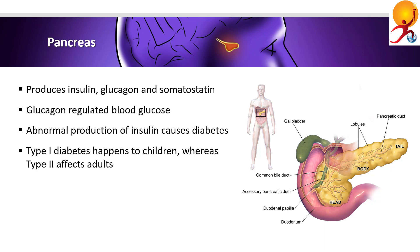Diabetes mellitus is caused by deficient production or action of insulin, characterized by low glucose uptake by cells and a high blood glucose level. It is identified by the diabetic triad: polyuria (excessive urination), polydipsia (excessive thirst), and polyphagia (excessive hunger). Diabetic people are advised to take fewer carbohydrates, as these are broken down into glucose and absorbed in the intestine.